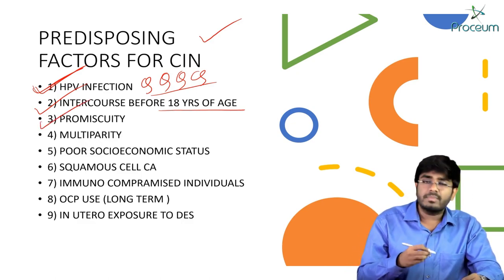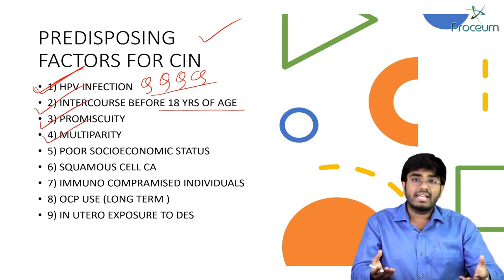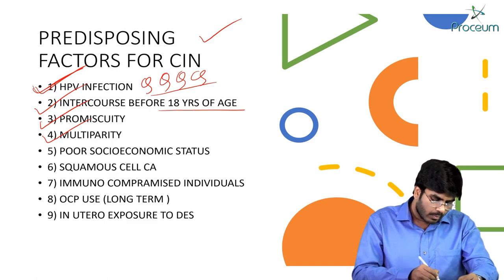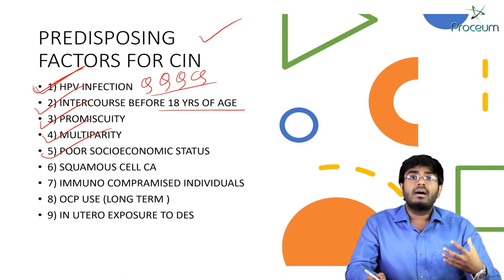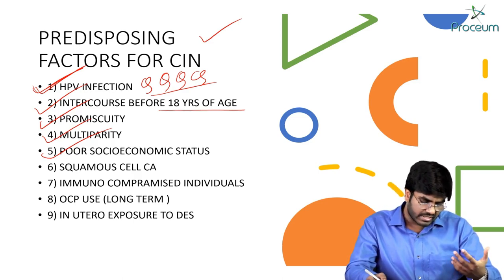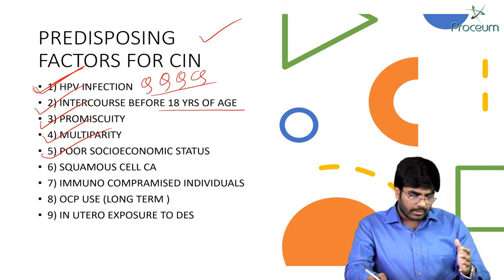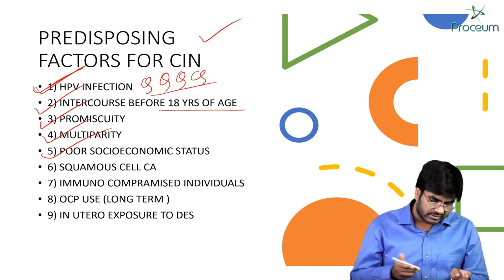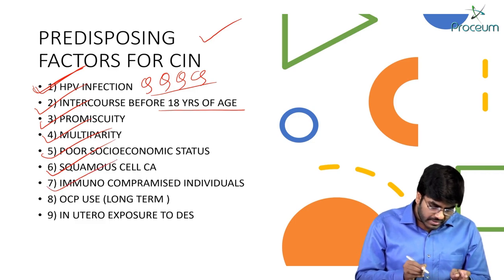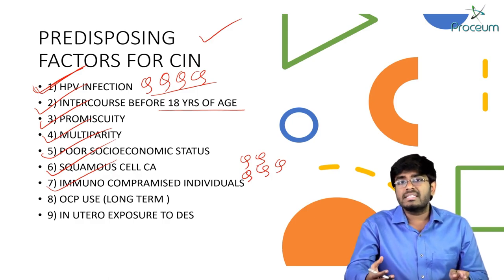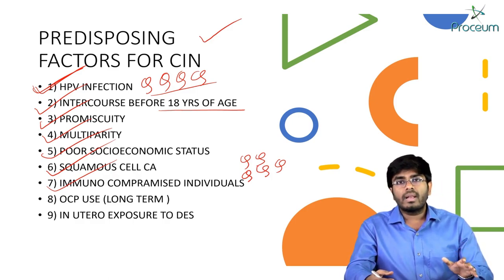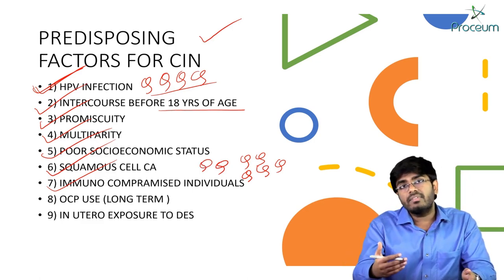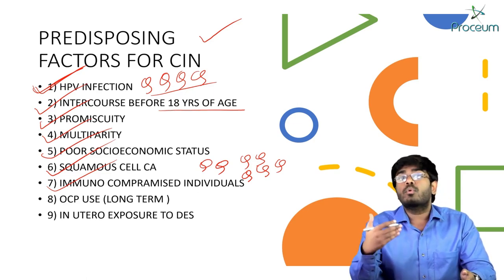Other predisposing factors include multiparity — if she has more deliveries, the transformation zone is more likely to be outside; poor socioeconomic status — related to poor genital hygiene or being a commercial sex worker with limited knowledge of STDs; and immunocompromised status — most females may get HPV at some point, but if immunocompetent, HPV cannot cause harm. In immunocompromised females, HPV can lead to CIN and even cervical cancer.